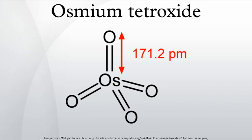OsO4 undergoes reductive carbonylation with carbon monoxide and methanol at 40°C and 200 bar of pressure to produce the triangular cluster Os3(CO)12, according to: 3 OsO4 + 24 CO → Os3(CO)12 + 12 CO2.